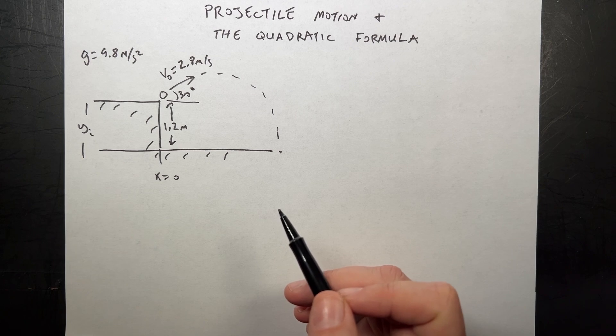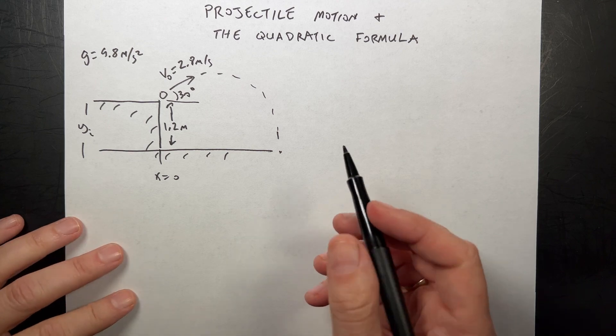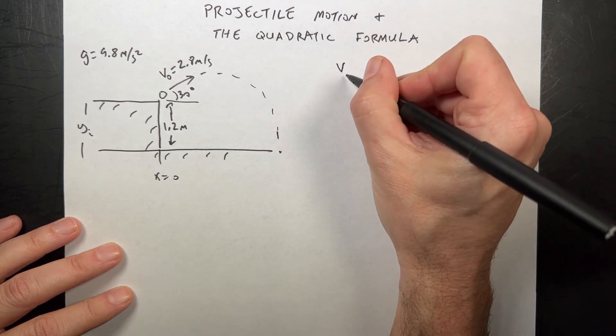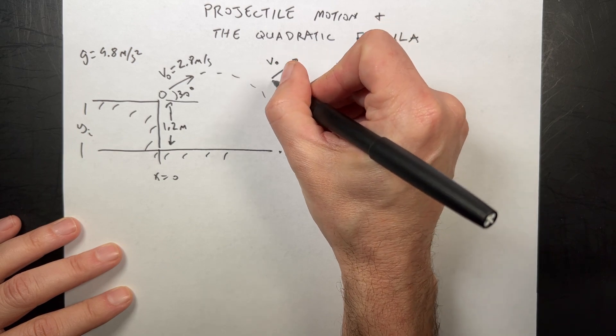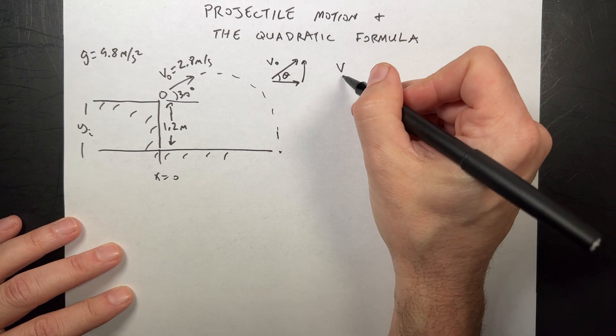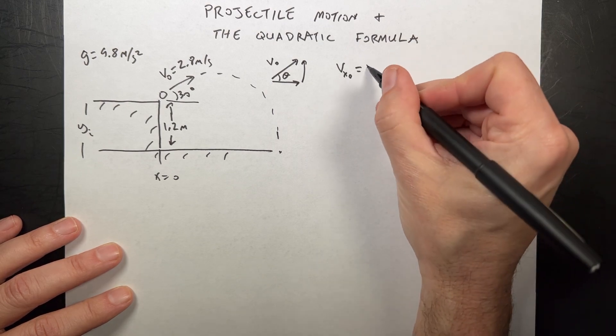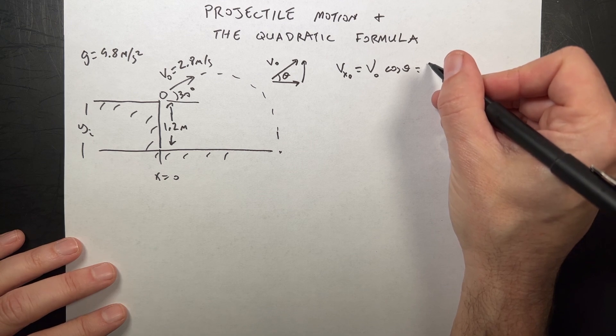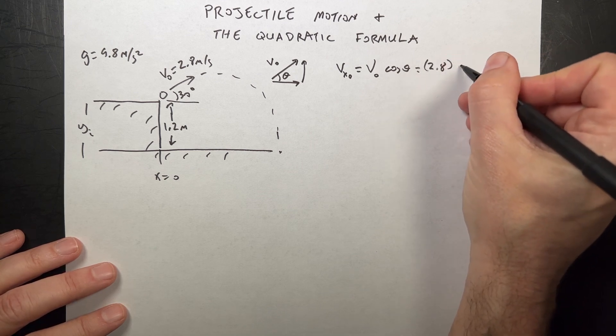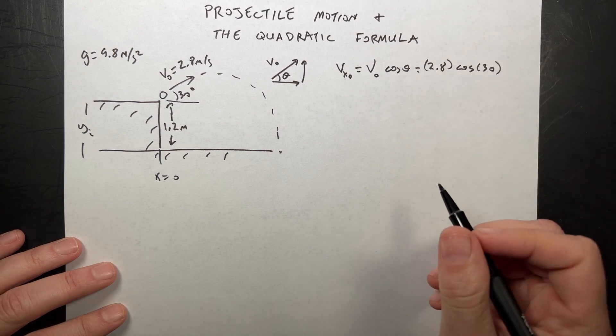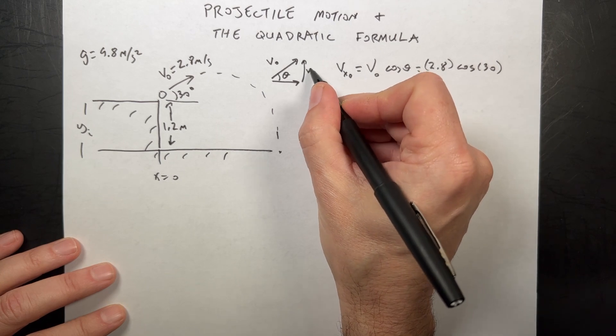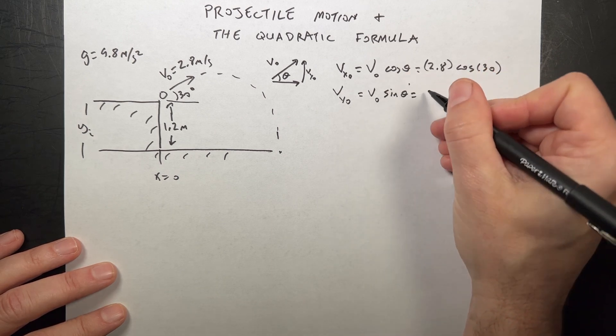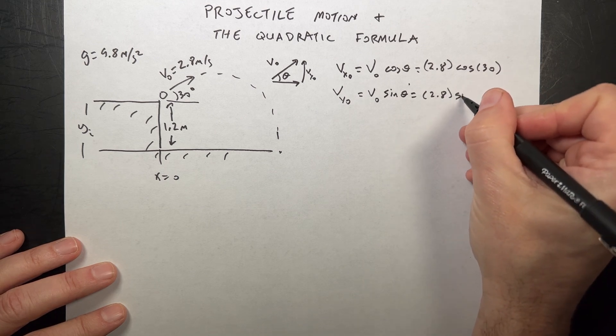In terms of projectile motion there are two important equations. First, I can find the initial velocity in the x and y direction. Here's my initial velocity, here's my x velocity, my y velocity, and my angle theta. So vx initial is v0 times cosine of theta, which is 2.8 meters per second times cosine of 30 degrees.